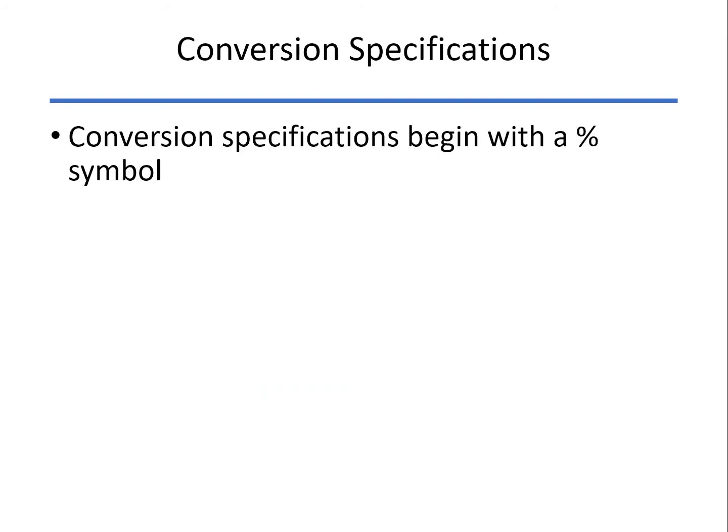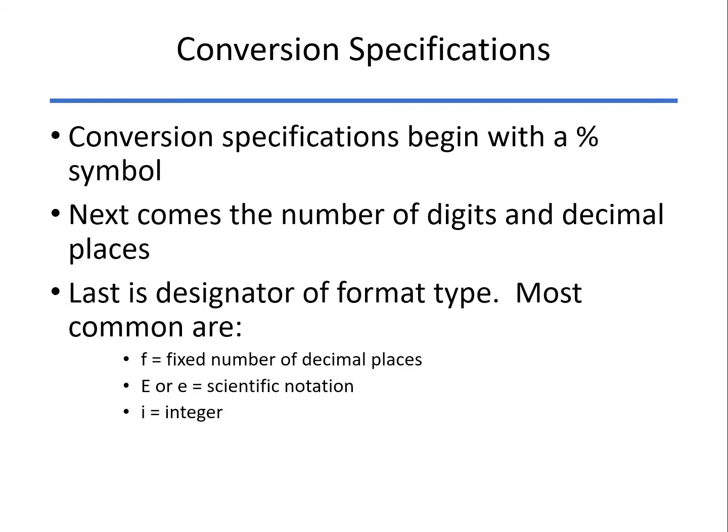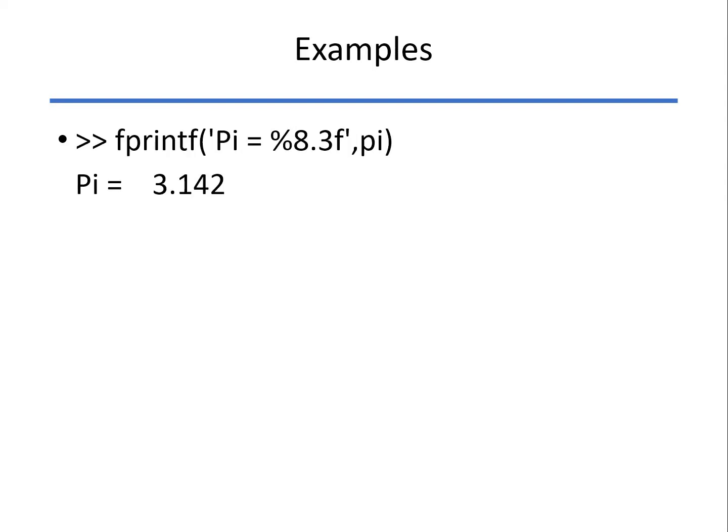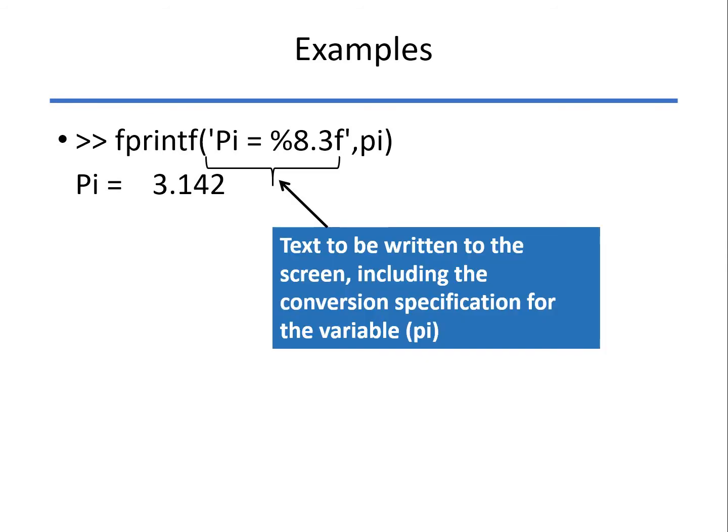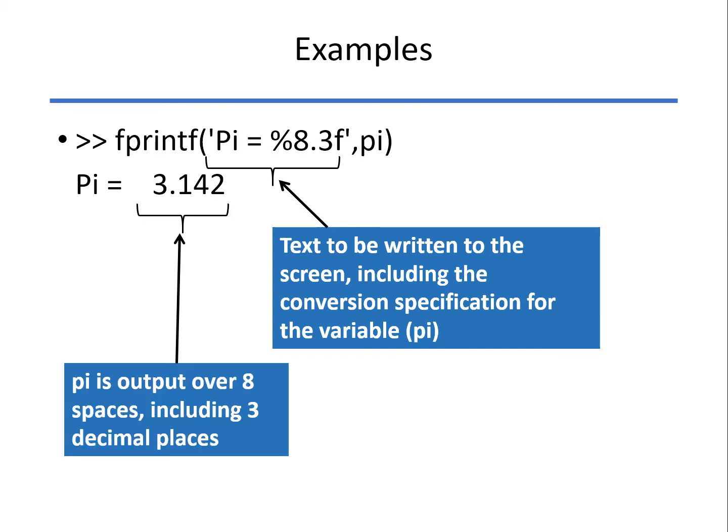So again, all the conversion specifications begin with percent symbol, number of digits and decimal places, and finally the format type, F for fixed, capital E or lowercase e for scientific notation, and I for an integer. So here's an example where we're going to print out pi to three decimal places. Notice the 8.3 means it's going to take up a total of eight spaces. It's going to be right justified within those eight spaces and show three decimal places.